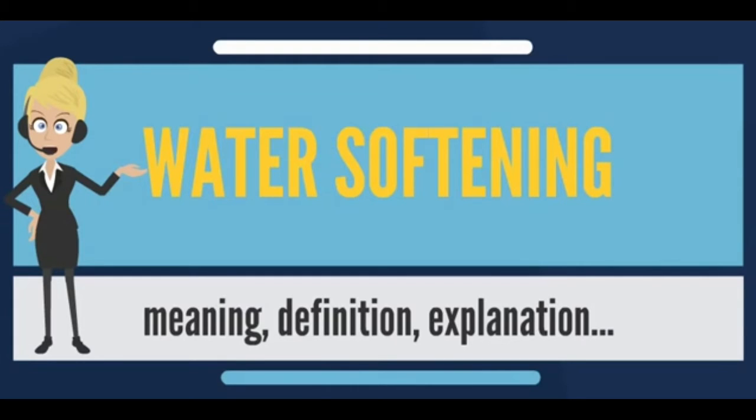Which of these effects is considered more or less desirable varies from person to person. Those who dislike the sliminess and difficulty of washing off soap caused by soft water may harden the water by adding chemicals such as baking soda, calcium chloride, or magnesium sulfate.